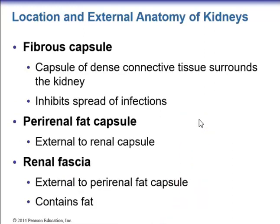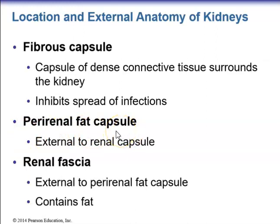The kidney has several covering layers. First is the fibrous capsule — dense connective tissue surrounding the kidney that helps inhibit the spread of infections. External to that is the perirenal fat capsule, a layer of fat surrounding the kidney. Then there is the renal fascia, which is external to the perirenal fat capsule and also contains fat.